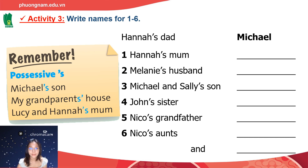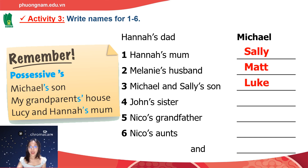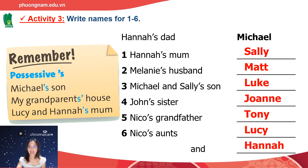Now you do these activities and then you can check your answers with me. Number one: Hannah's mom is Sally. Number two: Melanie's husband is Matt. Number three: Michael and Sally's son is Luke. Number four: John's sister is Joanne. Number five: Nicole's grandfather is Tony.